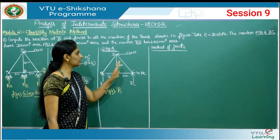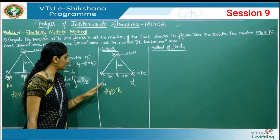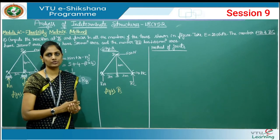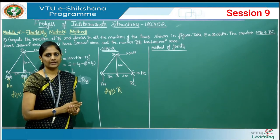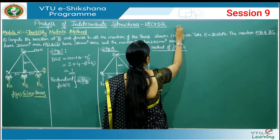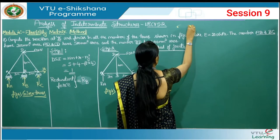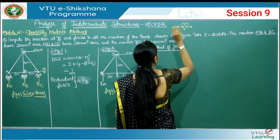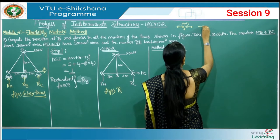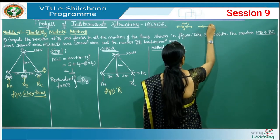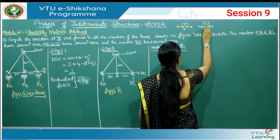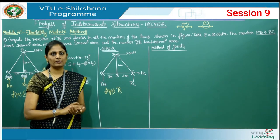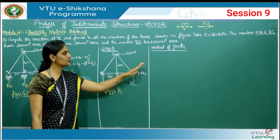We analyze this truss using the method of joints. The basic rule is: consider a joint where the number of unknown member forces is two or less. Assume unknown forces in the positive sense — forces moving away from the joint are treated as tensile (positive), and forces moving towards the joint are compressive (negative).